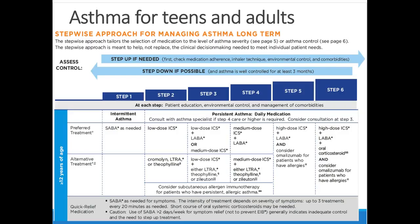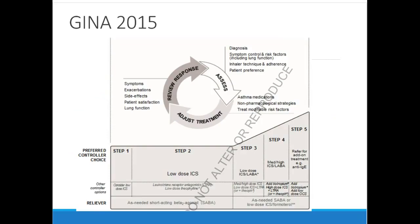The GINA guideline diagram shows the same stepwise approach. Notably in step four and five, tiotropium is listed as an additional option — anticholinergics are now incorporated into asthma guidelines, which is new. There's been enough evidence showing they work in asthma, not just COPD. However, you'll usually see them only in patients with pretty severe disease who are already on max dose steroid and beta agonist therapy.